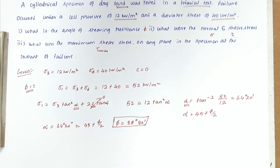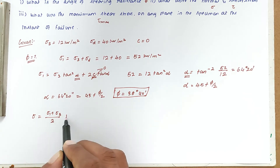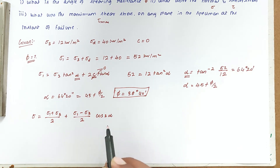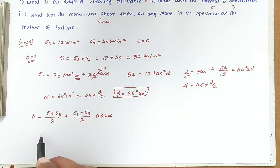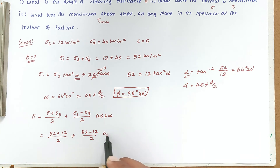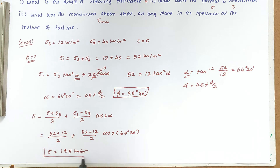Next, we find the normal stress σ on the failure plane using the formula: σ = (σ1 + σ3)/2 + (σ1 − σ3)/2 · cos2α. Substituting σ1 = 52, σ3 = 12, and α = 64°20': σ = (52+12)/2 + (52−12)/2 · cos(2×64°20') = 19.5 kN/m².